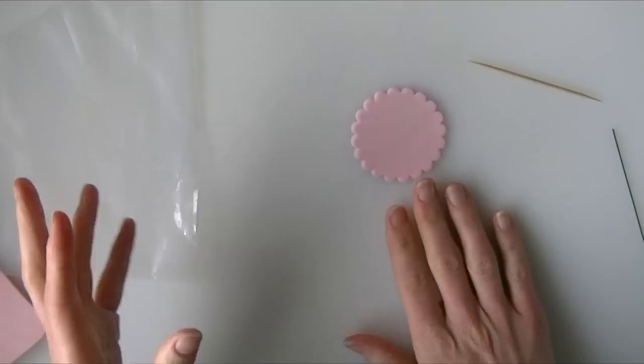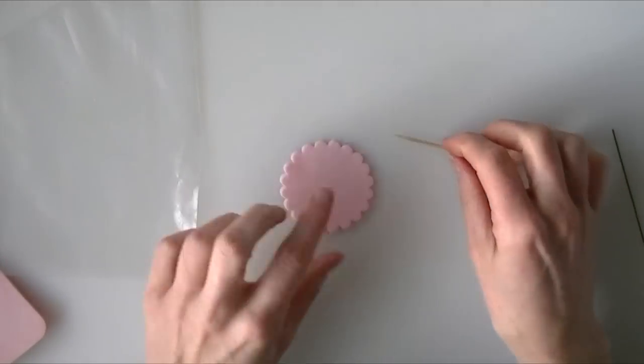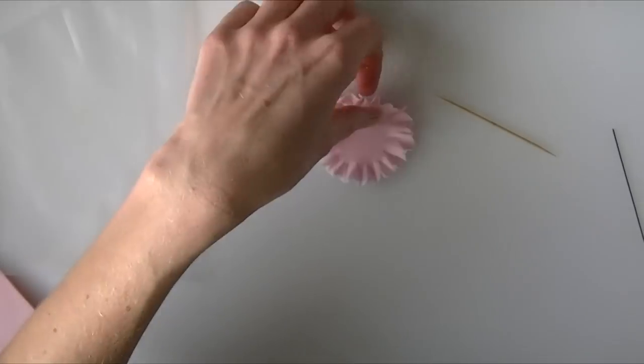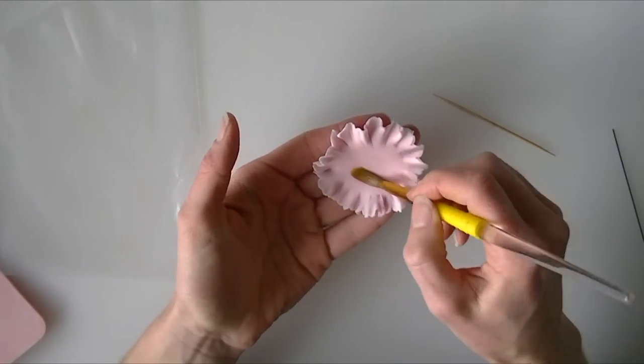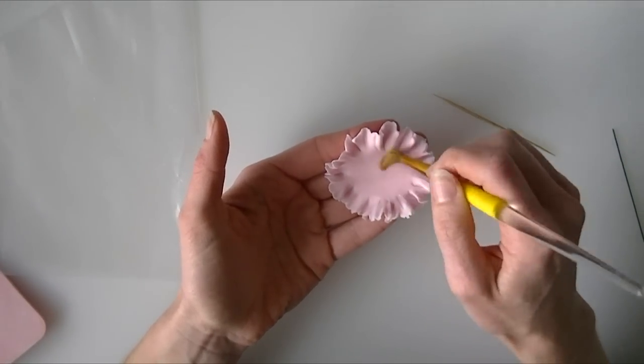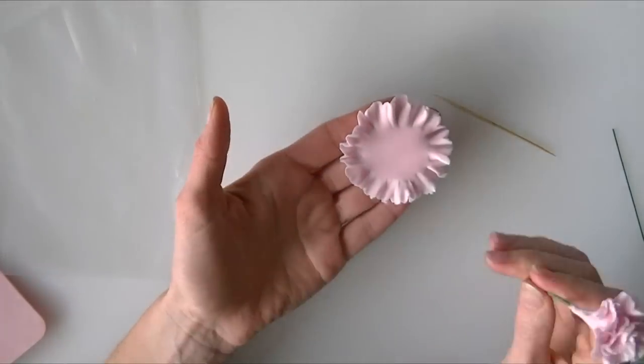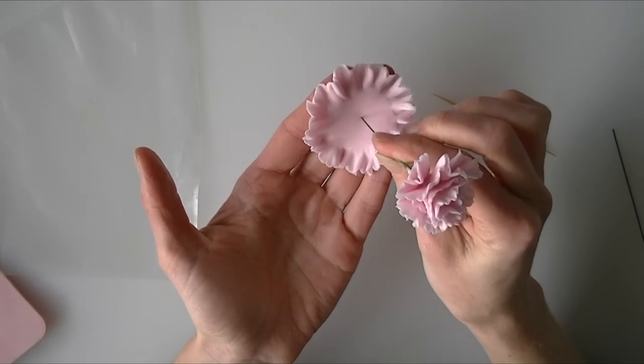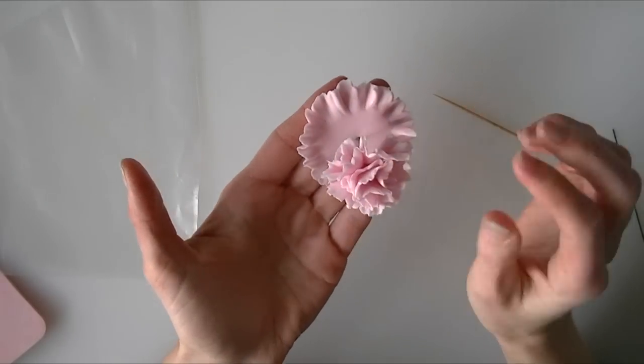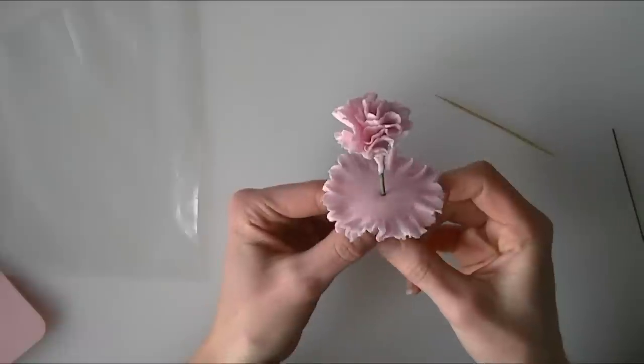So with our larger petal we are going to repeat doing exactly the same thing again, frilling the edge. So we have frilled the larger one. We are going to put water all in that center. Again not too much that you drown it. And we are going to push our flower in the center. Again don't forget to let it have a bit of time to dry before you do this.